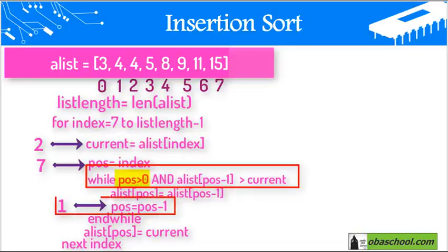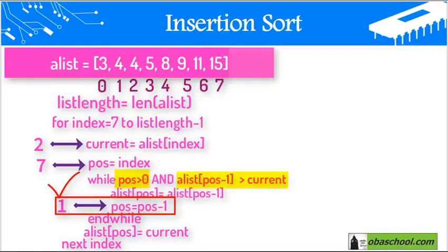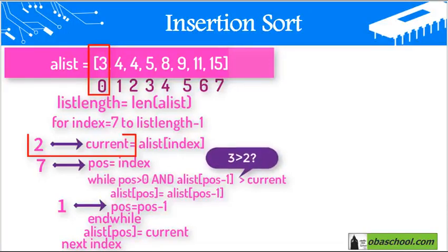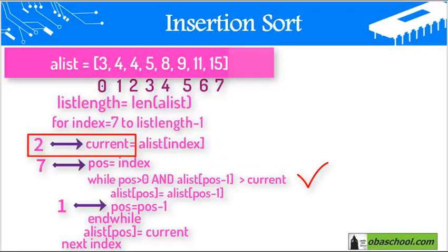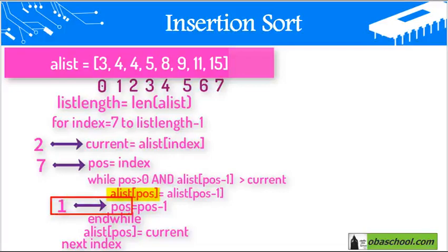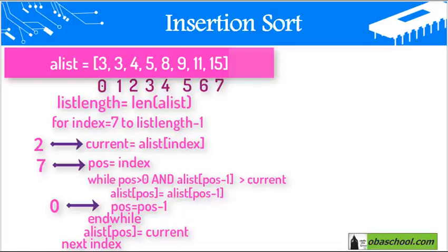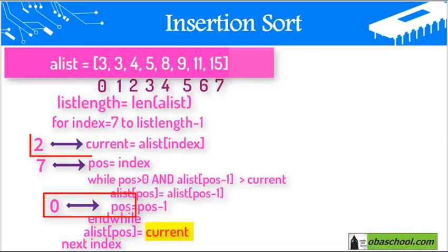We re-enter the while loop. While 1 is greater than 0 — the condition is true. And a list at pose minus 1, which is 1 minus 1, is index 0. The value found on index 0 is 3. Is 3 greater than the current, which is 2? It's correct, so we enter the while loop. We put on index 1 the value found on index 0, which is 3. We change pose to pose minus 1, which is 1 minus 1 equals 0. When pose is 0 we exit the loop. We then place at index 0 the value current, which is 2.